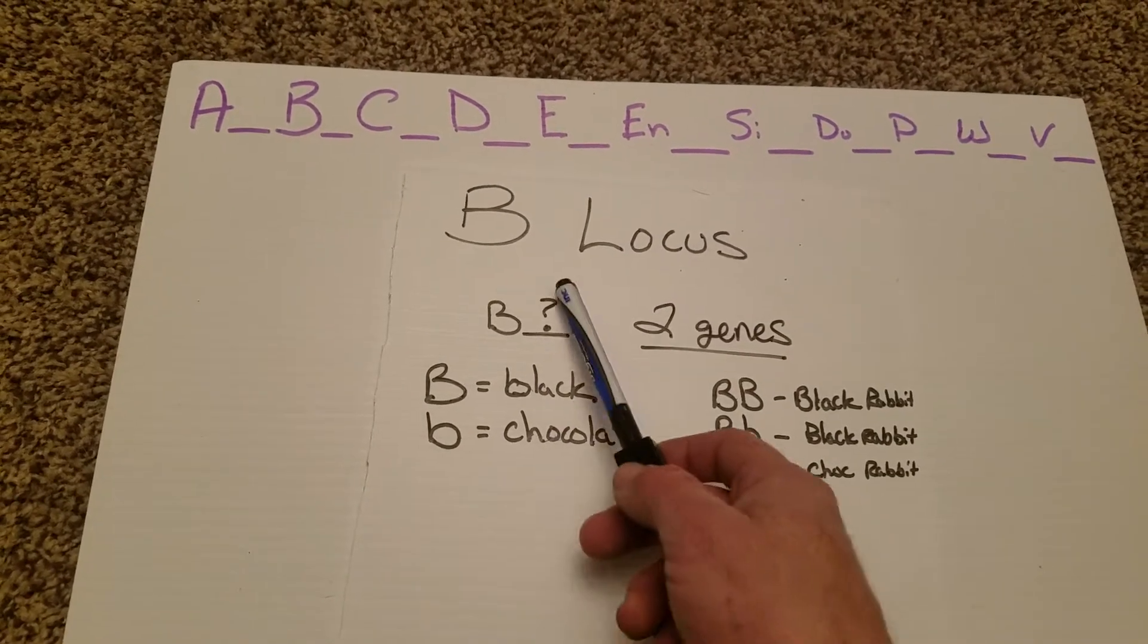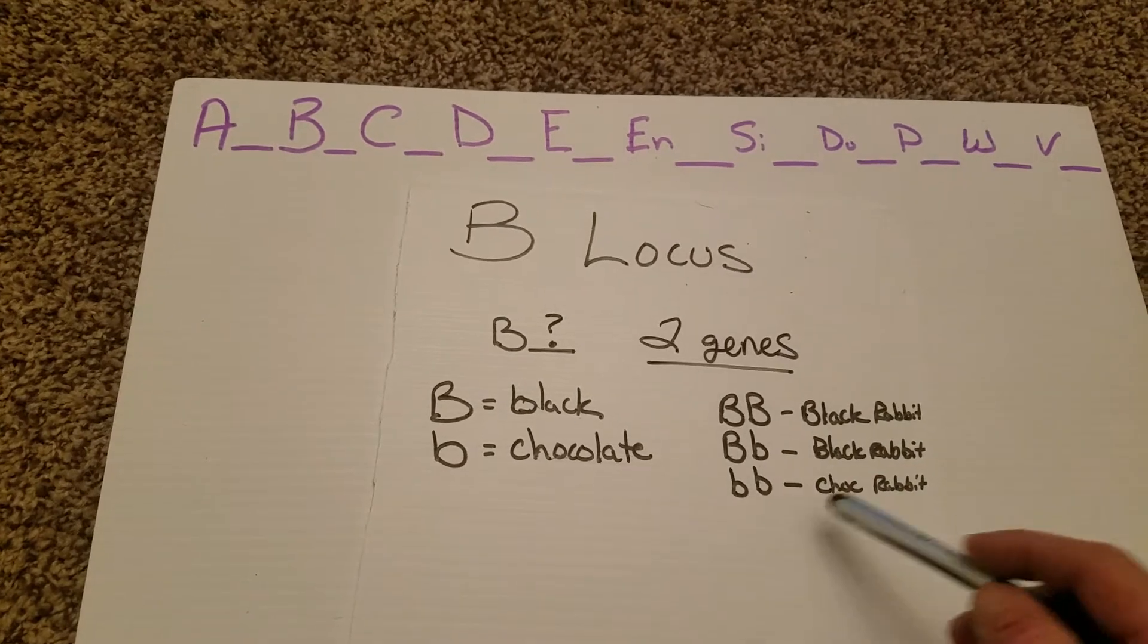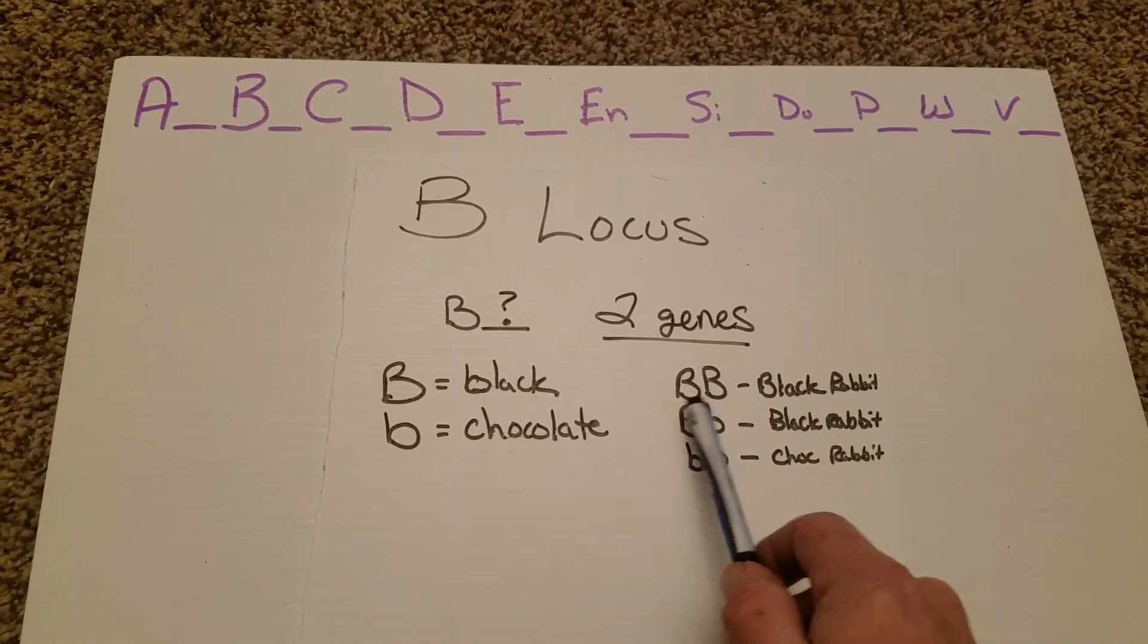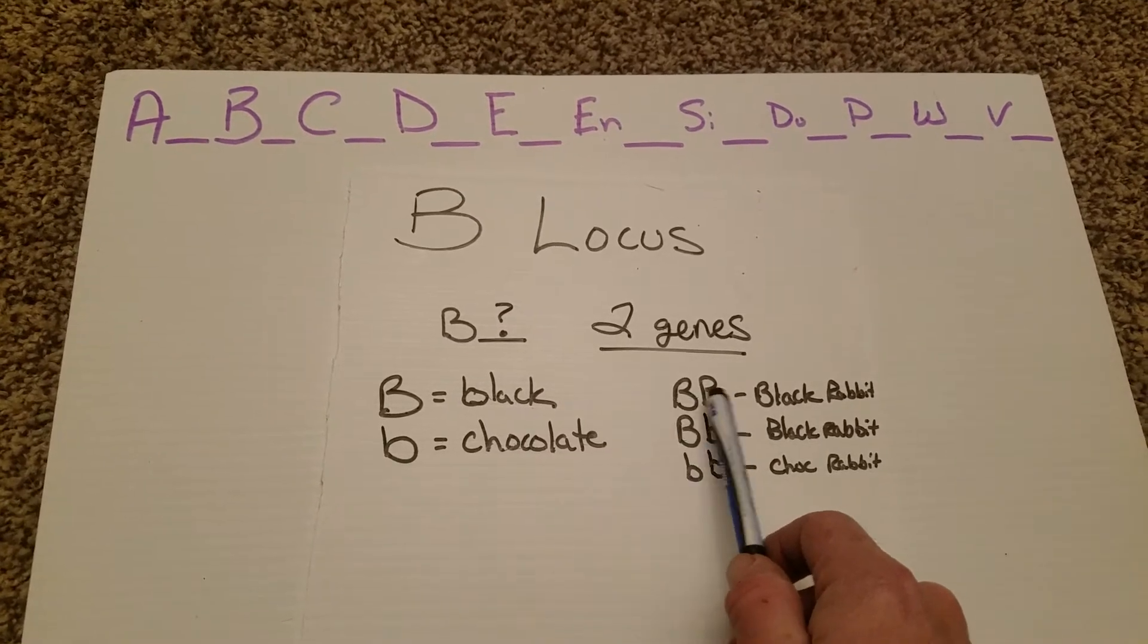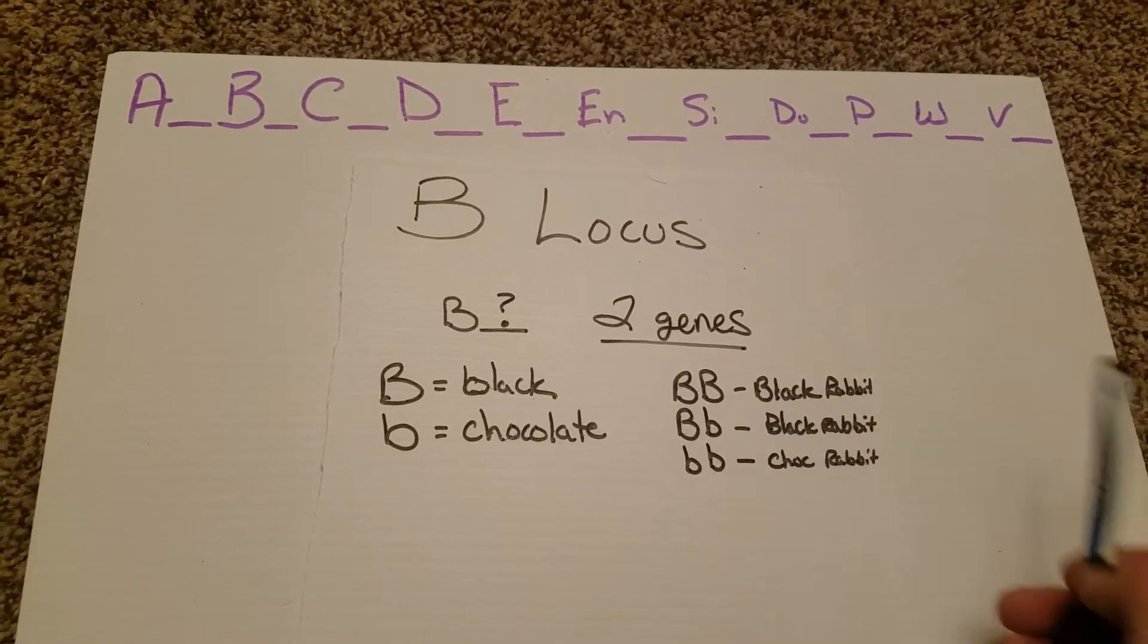Now this second gene could be hidden. You're not going to see it, and to best describe that, I've done a little bit of work here. If you have both capital B's, which is for black, you're obviously going to get a black rabbit.